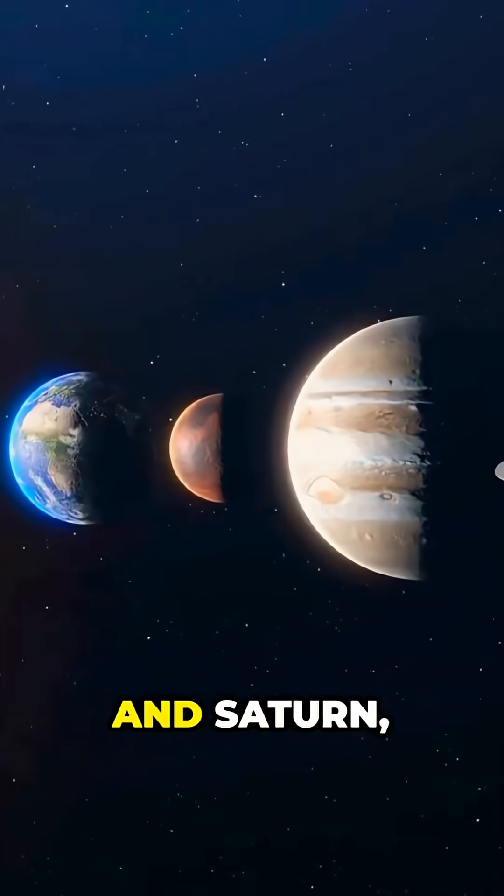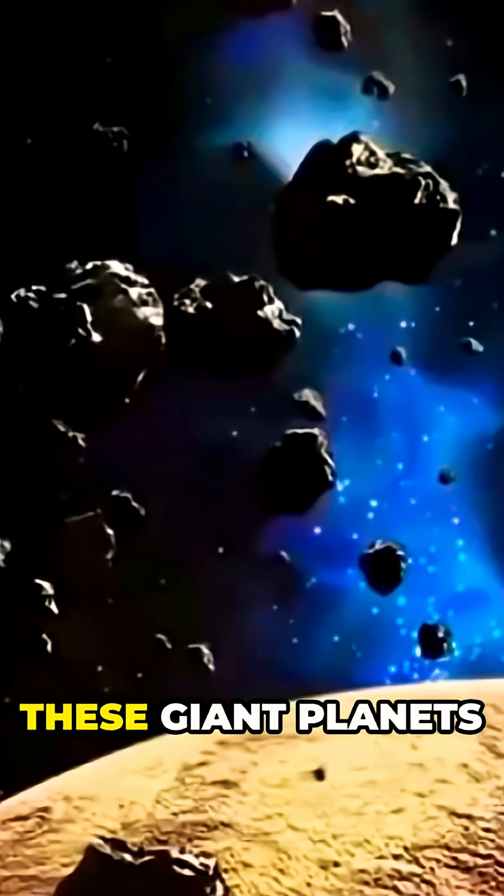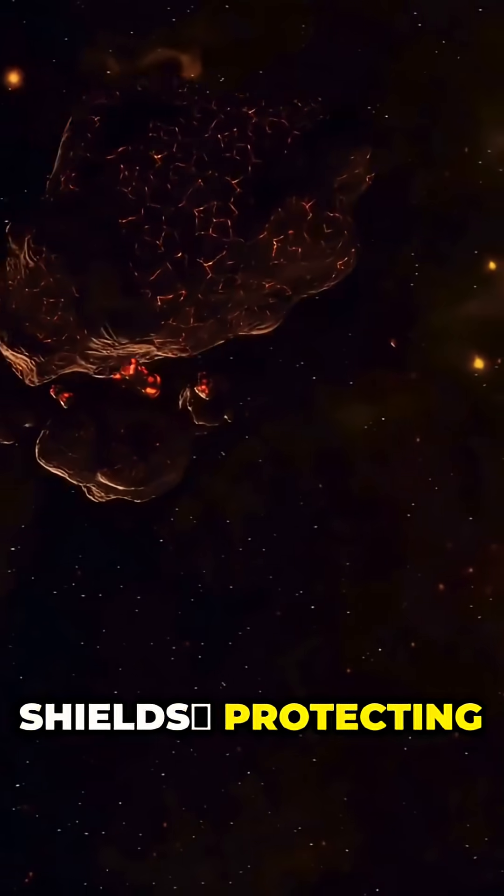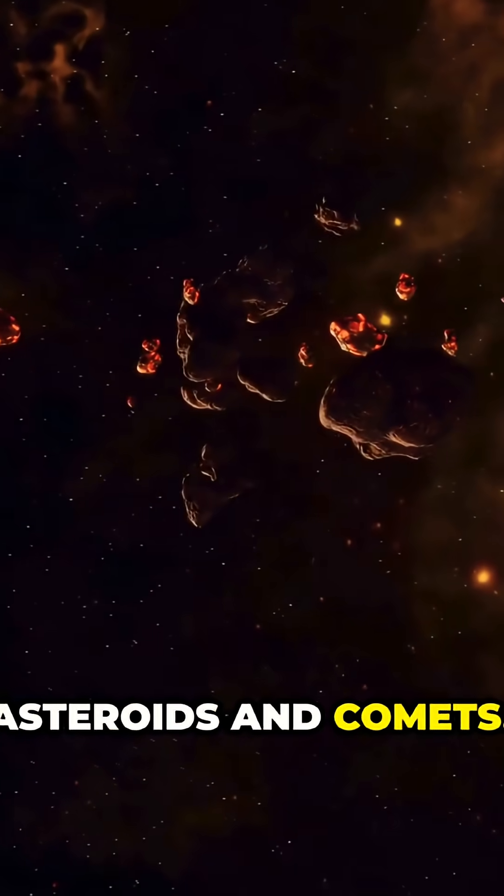But without Jupiter and Saturn, everything begins to change. These giant planets act as gravitational shields, protecting Earth by deflecting asteroids and comets.